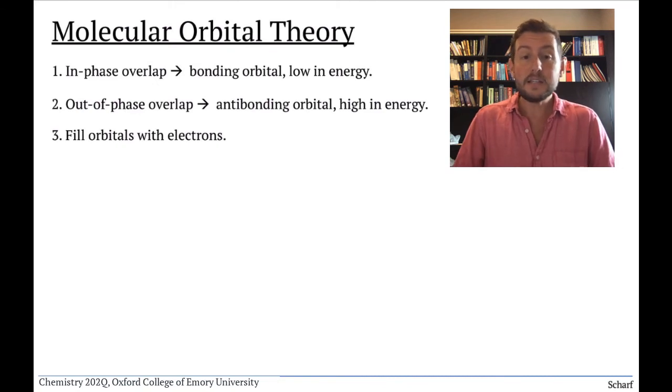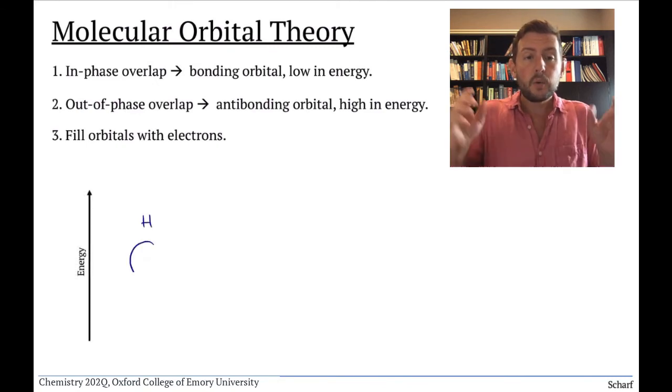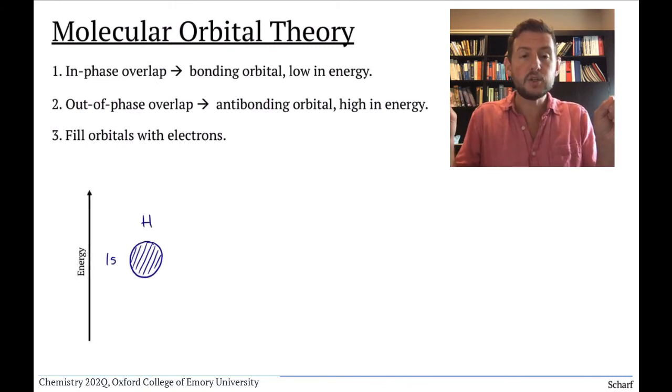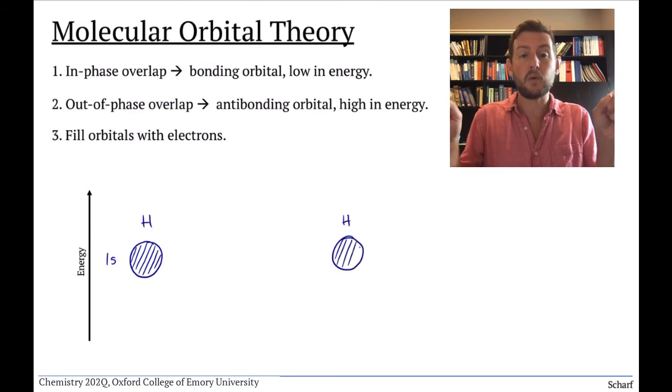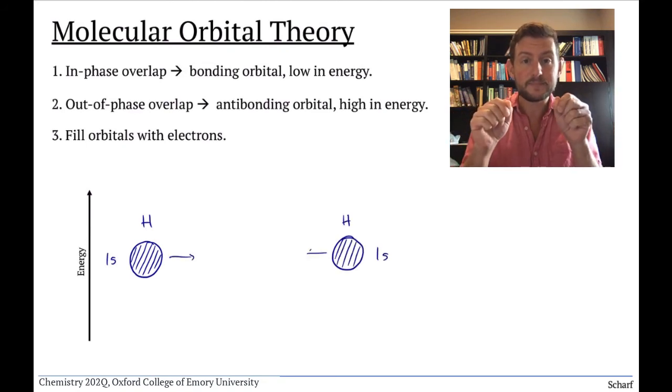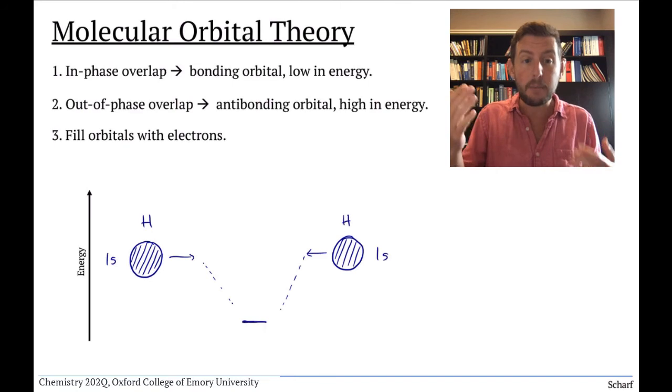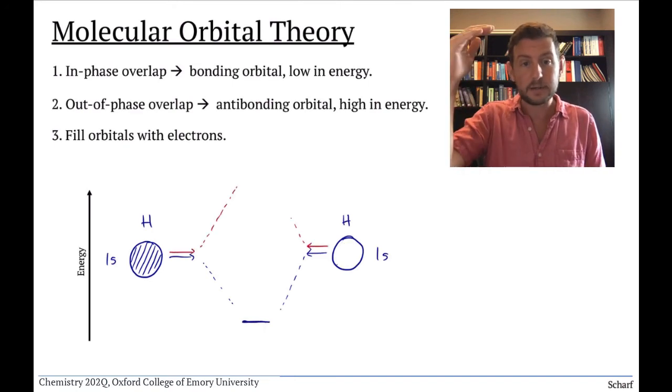We can see these three principles at work in the MO diagram of hydrogen, H2. When the two H atoms, each with their 1s atomic orbitals, come near each other, they interact to make a bonding orbital and an antibonding orbital.